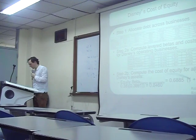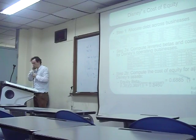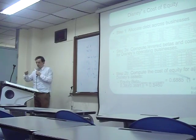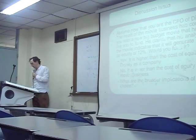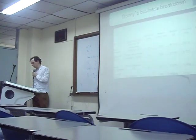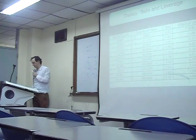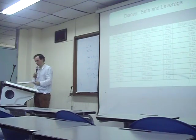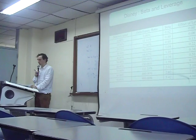Using the cost of equity equation — risk-free rate plus beta times the risk premium — we find the cost of equity for Disney is 8.9%. This is one of the tasks in the second assignment: calculating the bottom-up beta.